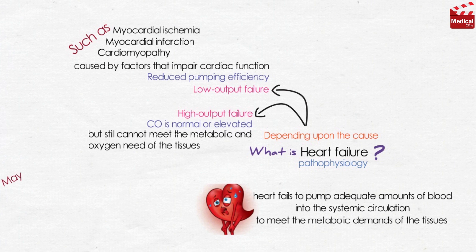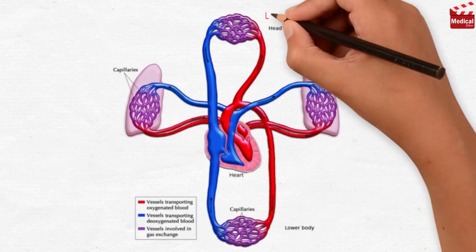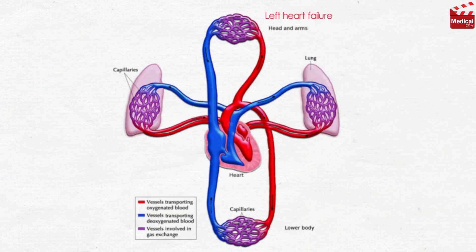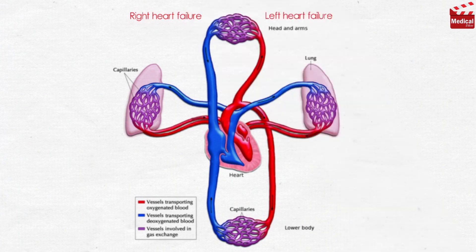High output failure may be caused by hyperthyroidism, which causes hypermetabolism, or anemia that causes reduced oxygen carrying capacity. Heart failure is also classified into left heart failure and right heart failure. Let's discuss their causes and manifestations.